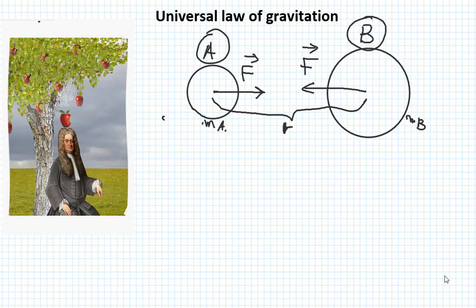So what is it about? If we have, for example, two objects, object A with a mass M sub A, and object B with a mass M sub B, they are going to interact with each other with a force called force of gravity. And this force, according to Newton, is equal to the product of their masses, which means M A times M B over the distance R squared.